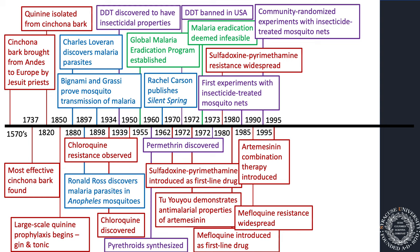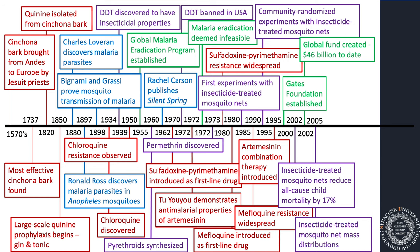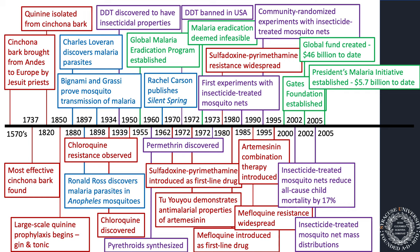In 1995, artemisinin combination therapy was finally introduced. In 2000, the Gates Foundation was established. Insecticide-treated mosquito nets were shown to reduce all-cause mortality by 17%. The Global Fund was created in 2002, and we began mass net distributions. The President's Malaria Initiative was established. The early 2000s were almost a renaissance in malaria control — we now had ACTs, artemisinin combination therapy, insecticide-treated mosquito nets, philanthropists like the Gates Foundation, and the Global Fund, which distributes money to fight HIV, tuberculosis, and malaria. President George W. Bush established the President's Malaria Initiative with a huge investment.